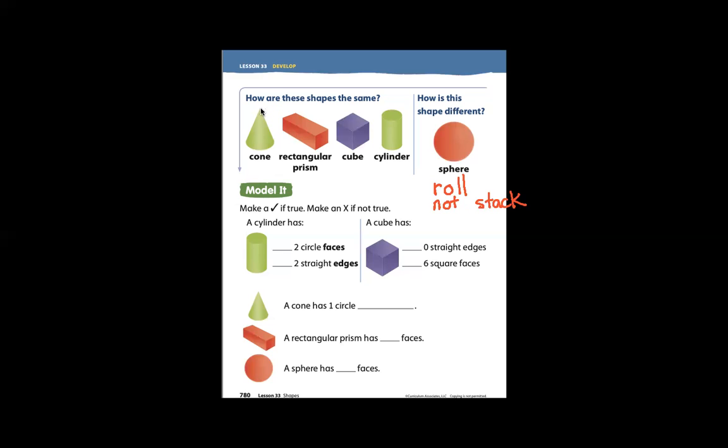A cone has an apex. The point of the cone is called an apex. A sphere does not have any apex or point.